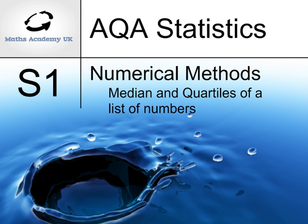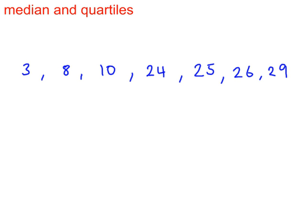The median and quartiles of a list of numbers. First step: make sure your data is in order of size, smallest to largest.